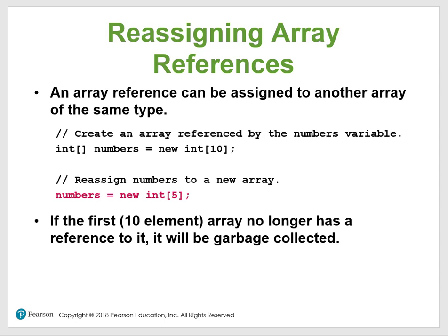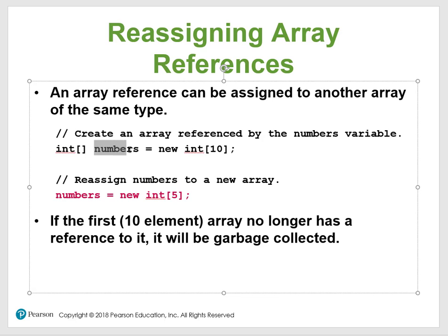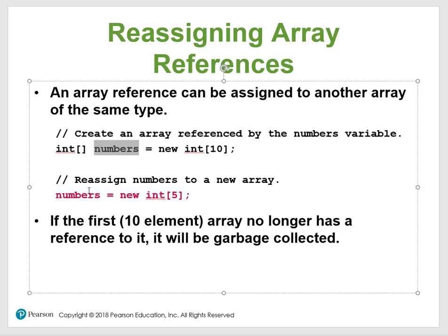So here you can actually create an array reference using a number variable. This array is referenced by a new int array of size 10. You can assign that to the number variable. Now if you reassign number to a new array, it will no longer be a reference to the old one — that old array gets garbage collected.